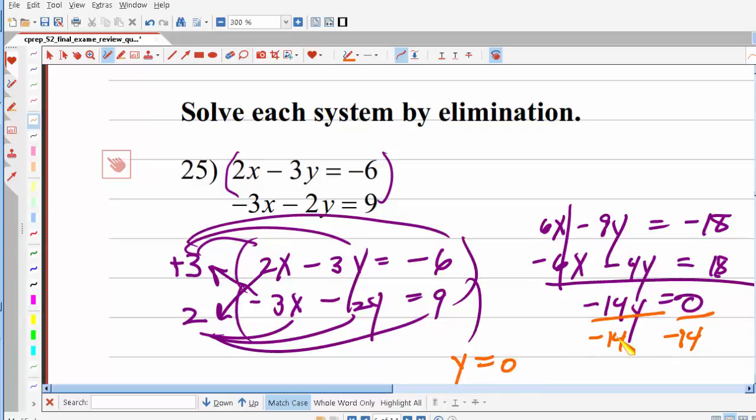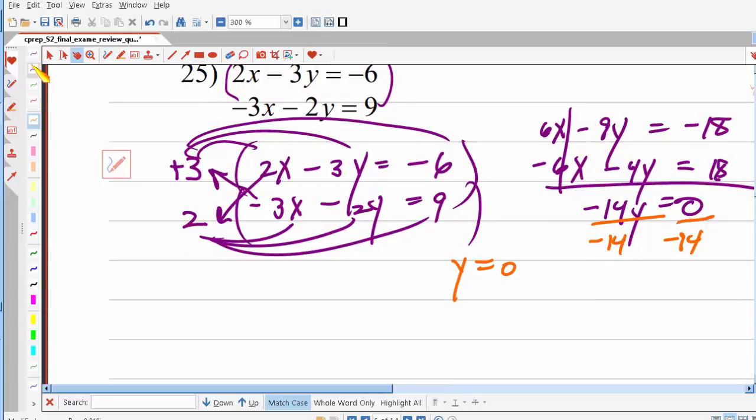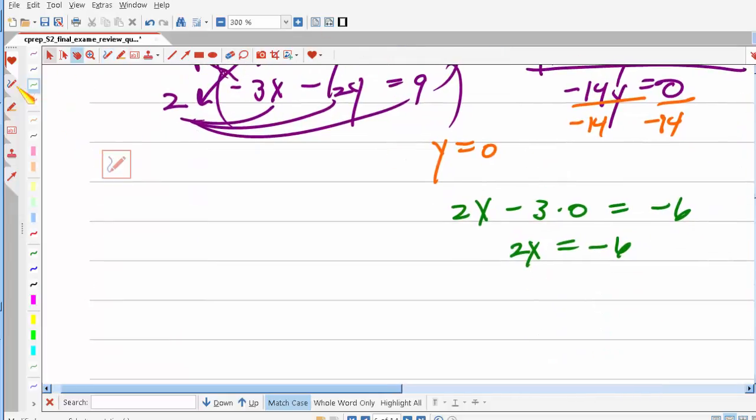Alright, so once you have the value for x, or for y, you go back and substitute that value into one of the original two equations. So I'll just use the first one. So I would have 2x minus 3 times 0 equals negative 6. That would be the same thing as that. And then I would divide by 2, and get x equals negative 3. And, of course, don't forget y equals 0 is also part of your solution.